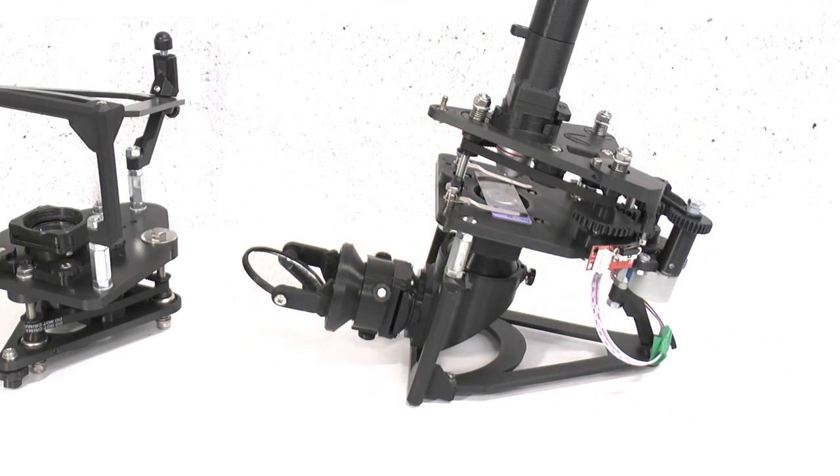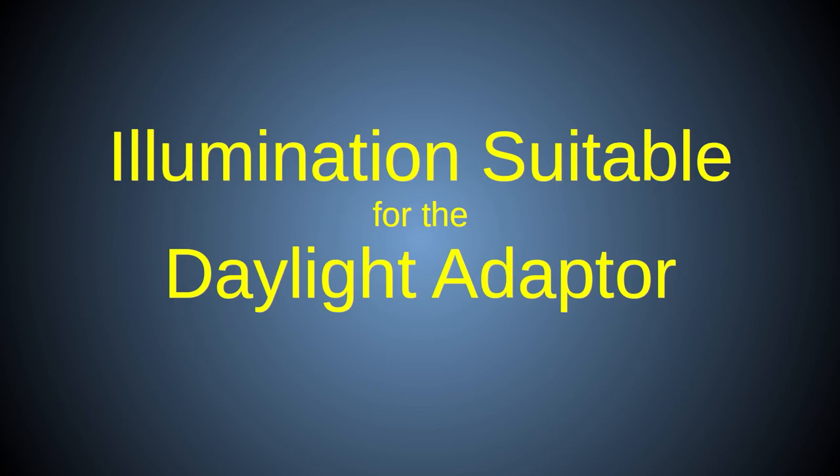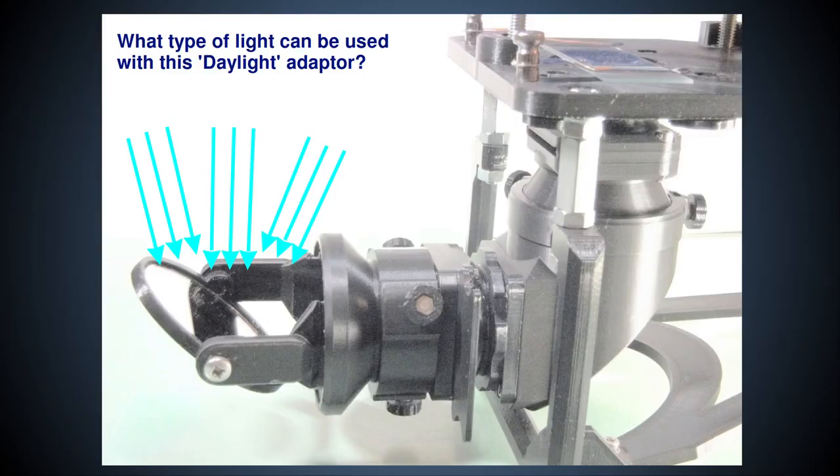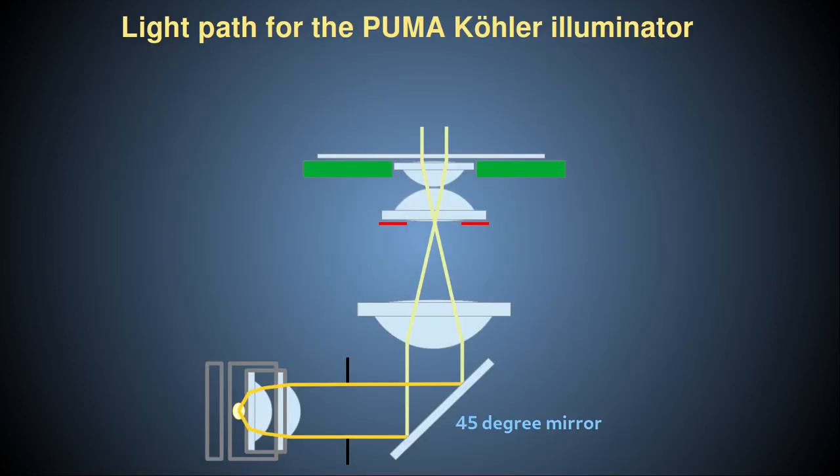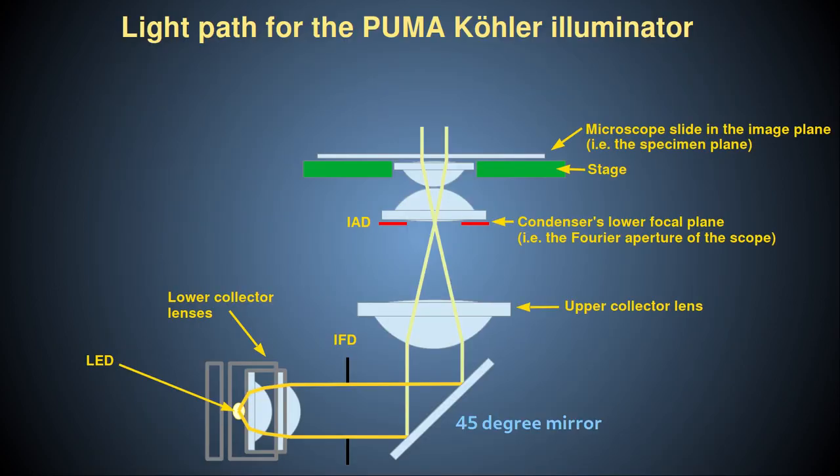However, not any old light source will be suitable. So, what type of light source can be used with this adapter? You may think that the clue is in the name. However, it's important to consider the light path of the Puma Köhler system to understand why you must be careful when selecting the type of external illumination to use, whether it's from natural daylight or an artificial source.